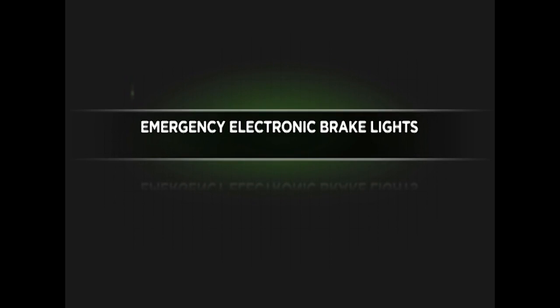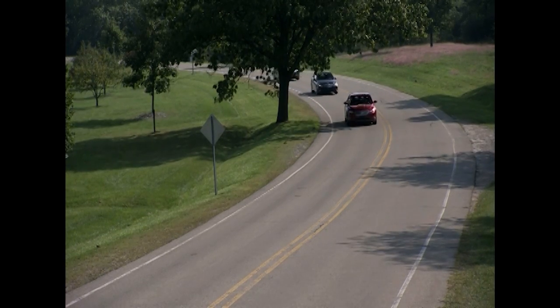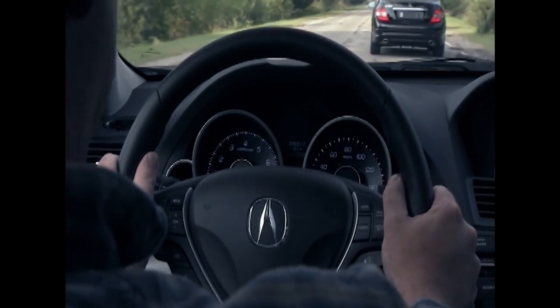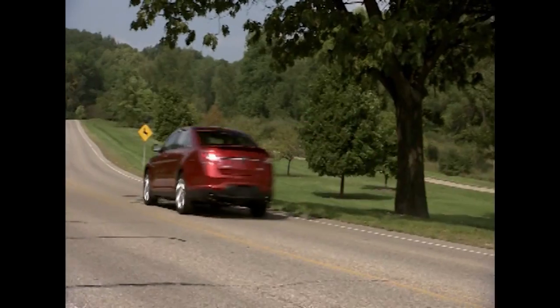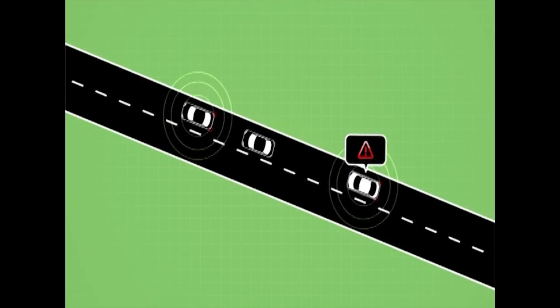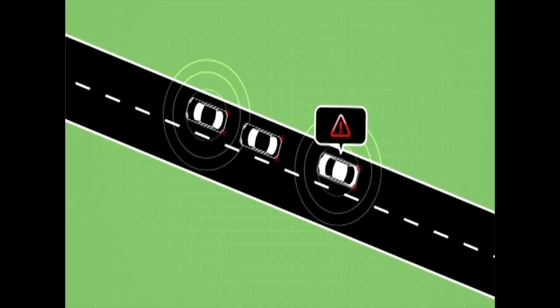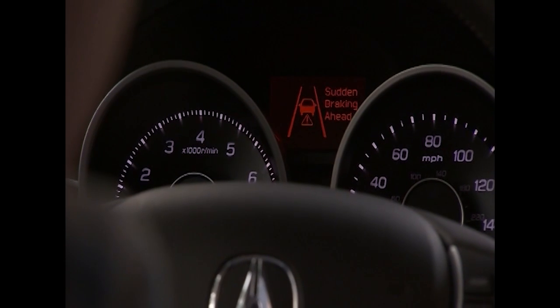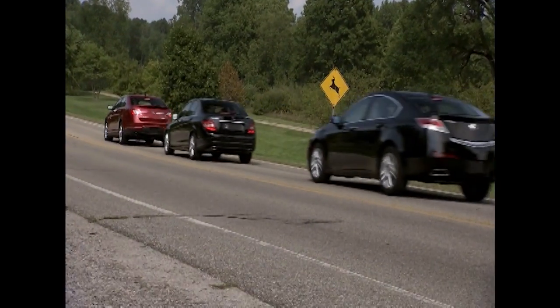The Emergency Electronic Brake Light Safety Application, or EEBL, can notify a driver of a hard braking vehicle in the path ahead. Three vehicles are traveling in the same lane. You are driving the last vehicle. You can't see the first vehicle because it's being blocked by the vehicle directly in front of you. Unexpectedly, the first vehicle slams on its brakes. Because of V2V communication, your vehicle is able to provide a warning of the hard braking vehicle ahead, well before you see brake lights from the vehicle directly in front of you. This warning will enable you to drive safely and avoid a potential crash.